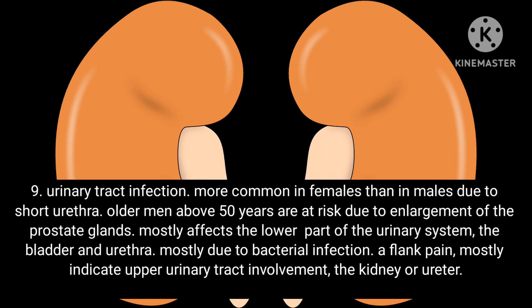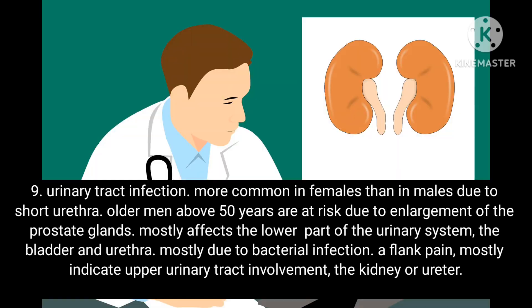Ninth, urinary tract infection — more common in females than males due to the short urethra. Older men above 50 years are at risk due to enlargement of the prostate gland. It mostly affects the lower part of the urinary system — the bladder and urethra — and is mostly due to bacterial infection. Flank pain mostly indicates upper urinary tract involvement, such as the kidney or ureter.